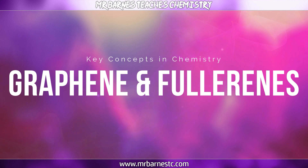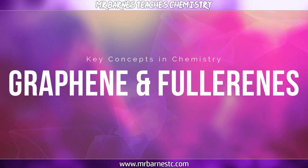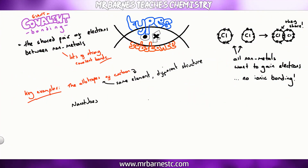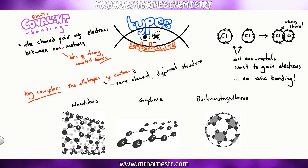Moving on to the next allotropes: graphene, fullerenes such as buckminsterfullerene, and nanotubes. One important point is that buckminsterfullerene itself is not a giant covalent compound — it has the formula C60, so it is simple covalent — but it's included here because it is an allotrope of carbon.